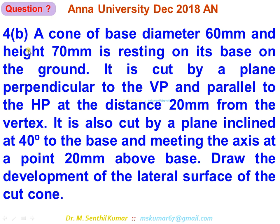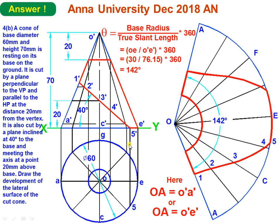Problem 4b: a cone of base diameter 60 mm and height 70 mm rests on its base. It is cut by a plane perpendicular to VP and parallel to HP at a distance 20 mm from the vertex — making the first truncation. It is also cut by a plane inclined at 40 degrees to HP meeting the axis at 20 mm above the base. The first cut is parallel to HP, giving the first frustum; the second cut is inclined at 40 degrees.